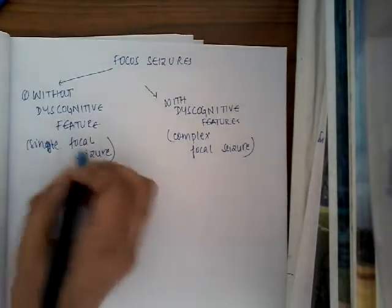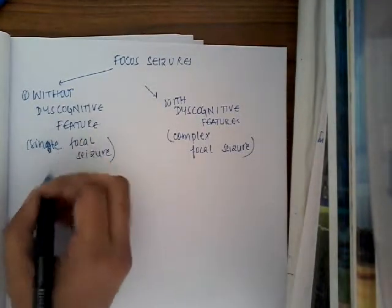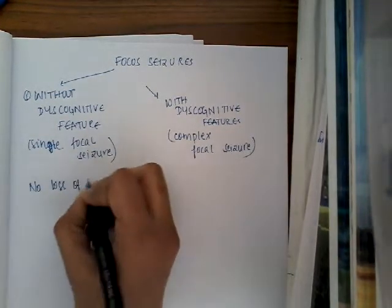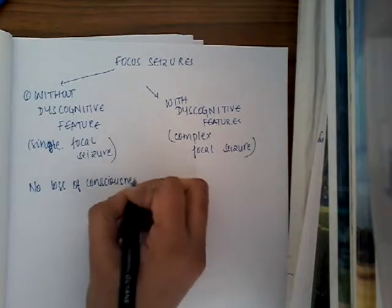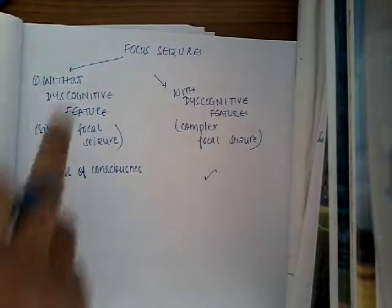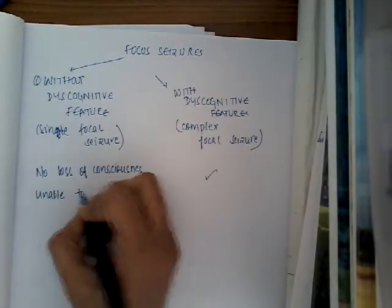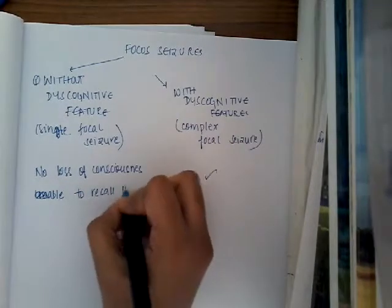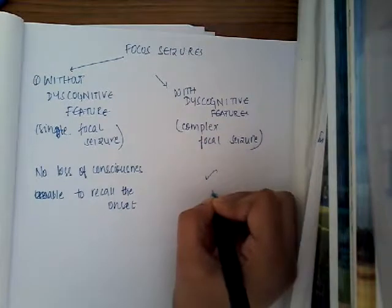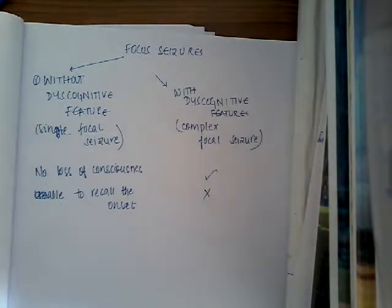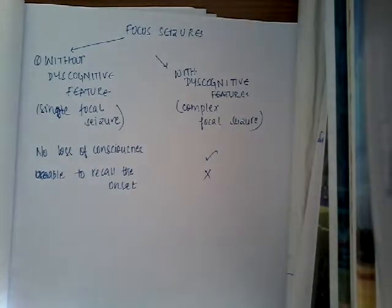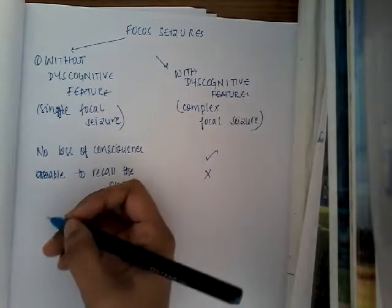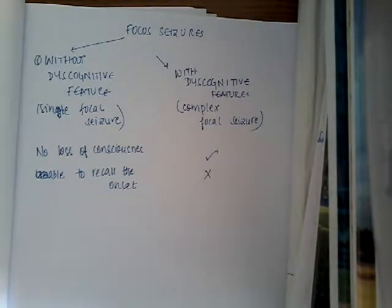Without discognition means there is no loss of consciousness, because cognitive abilities are normal. But in discognition there is loss of consciousness. In focal seizures without discognition, the person is able to recall the event — if you ask him what happened prior to the episode and how it went, he will explain clearly. In focal seizures with discognitive features, he is not able to recall the event.